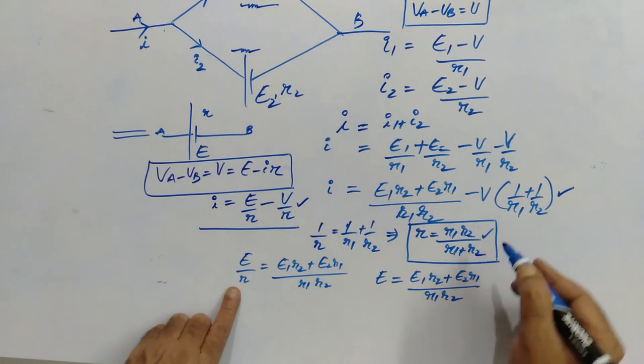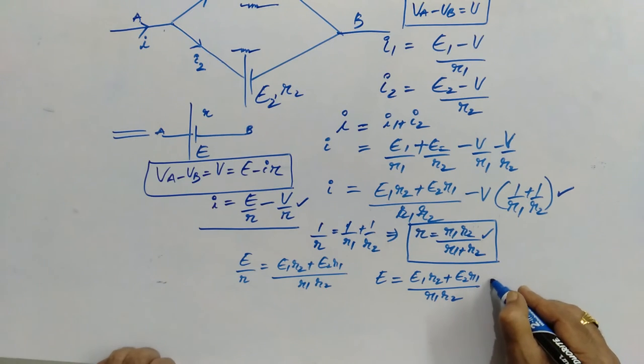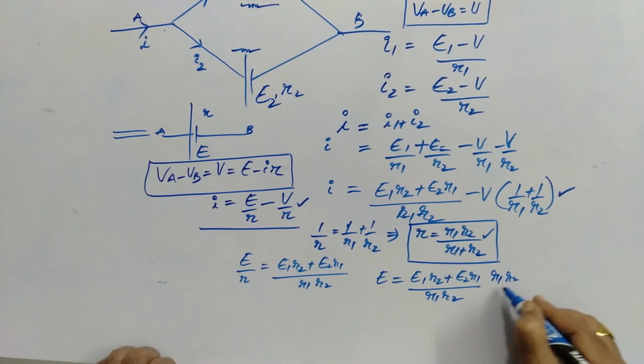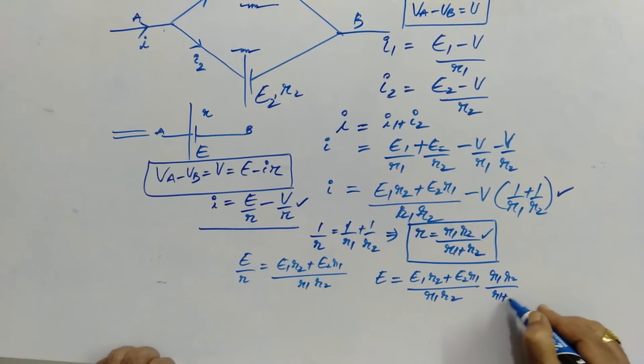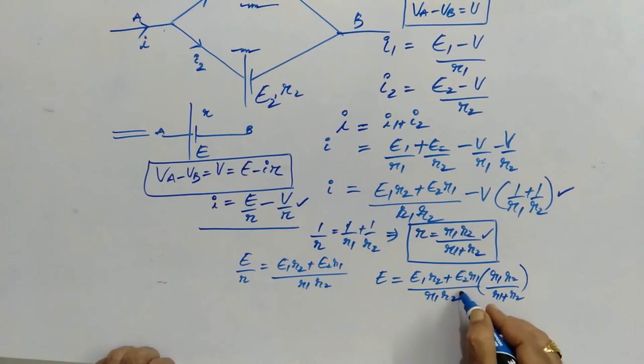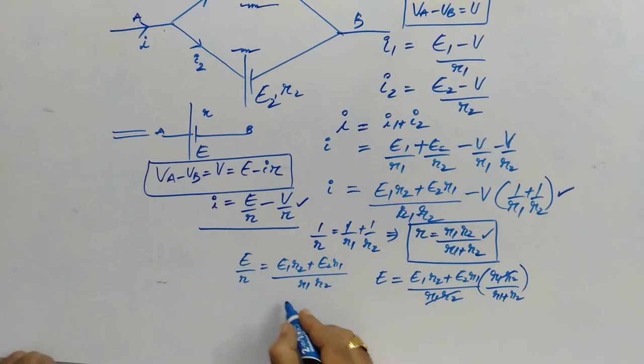we can put up the value as R1 R2 by R1 plus R2. I can cancel out this and finally,